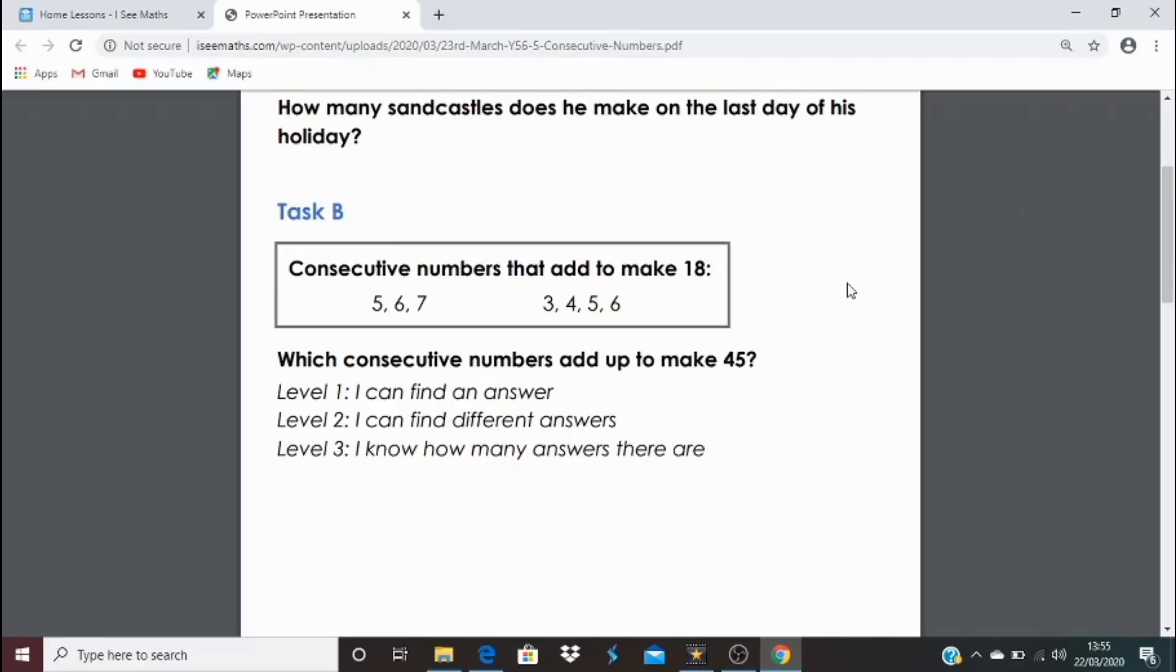Here's an example above. Consecutive numbers that add to make eighteen. Well, five, six, and seven do. But so do three, four, five, and six. Well, which consecutive numbers add up to make forty-five? Level one is you can find an answer. Level two, you can find different answers to that question. But the challenge is to get to level three. How many answers are there to that question? How do you know that you've found them all? And how do you know that there aren't any more answers?